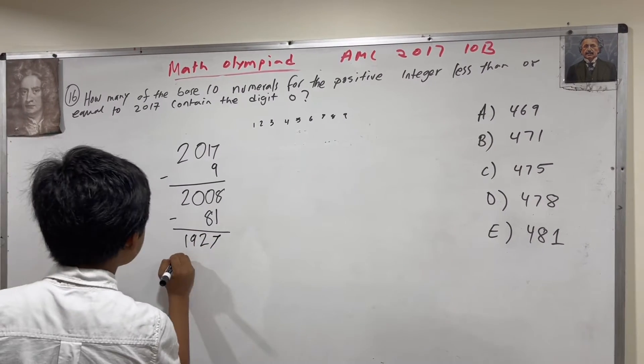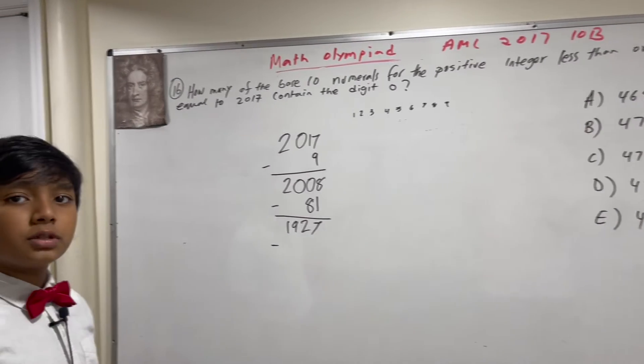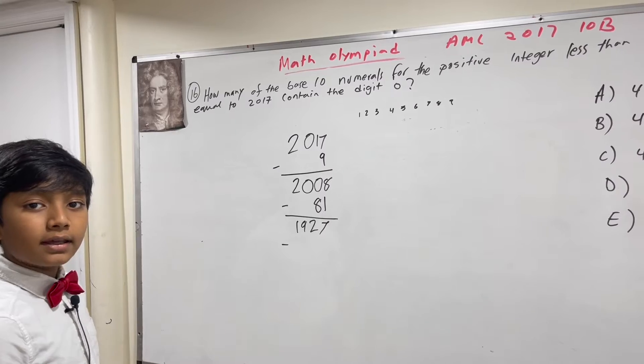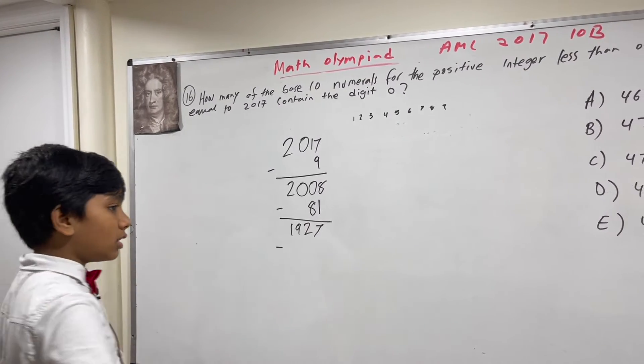Okay. And now, we're going to subtract the amount of three-digit numbers that have no 0.